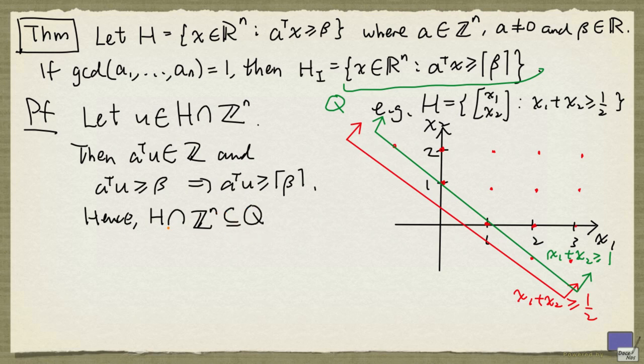And this shows that the set of all integer points in H is a subset of Q. And since Q is convex, the convex hull of this set, which is H_i, is a subset of Q.